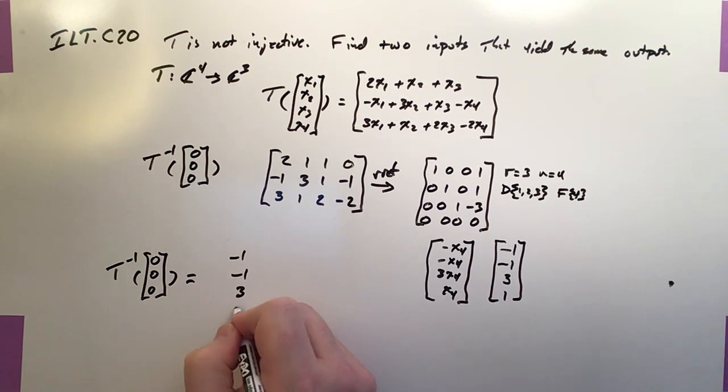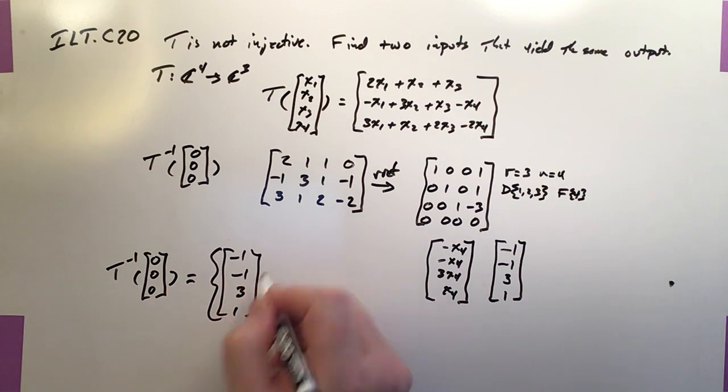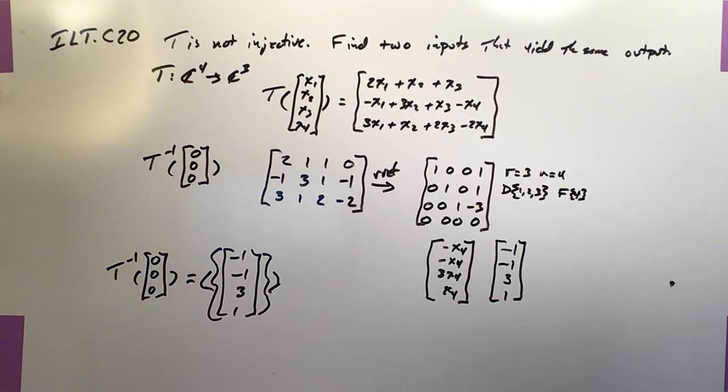If that basically produces this as its spanning set. Negative 1, negative 1, 3, 1. And then brackets. And then span it. Then any two members of that set would work.